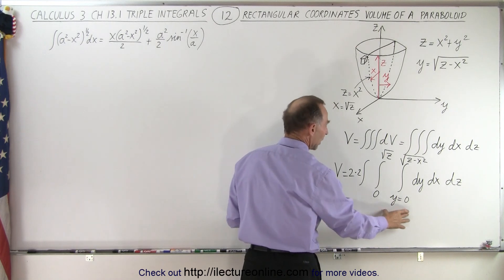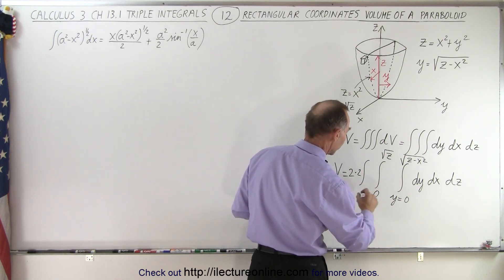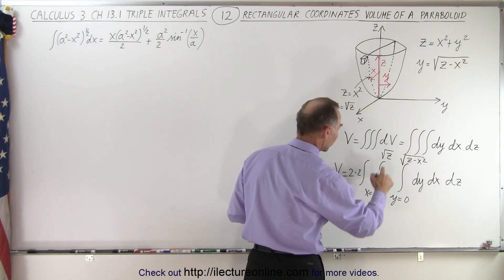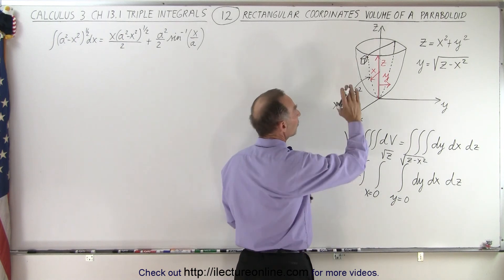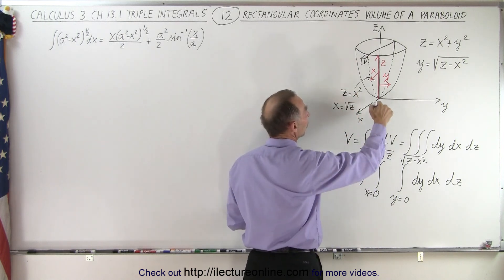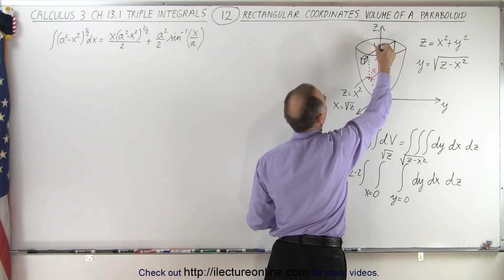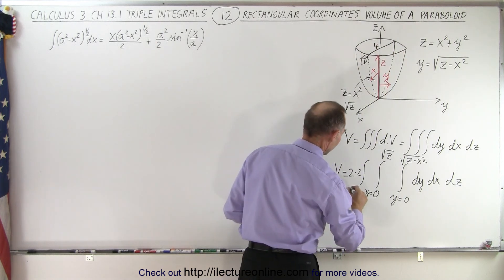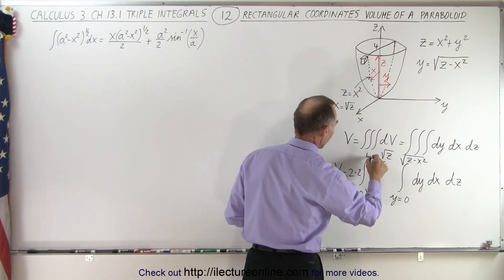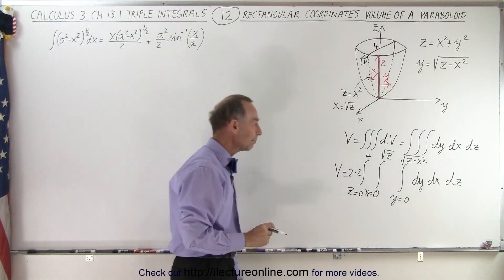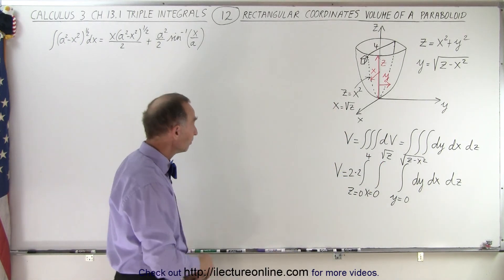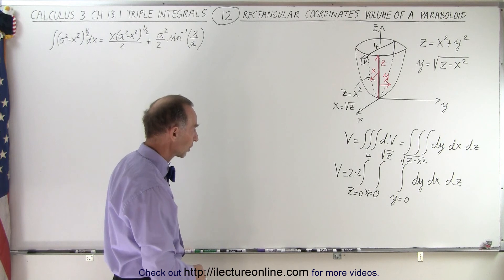So now we have the limits for y, we have the limits for x from 0 to square root of z, and now in the z direction there's no longer any limits, we go from 0 to the top of the paraboloid which at that point is equal to 4. So our z limits are going to go from 0 to 4 and that will then be our integral that we have to work, it's a triple integral.